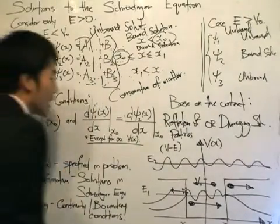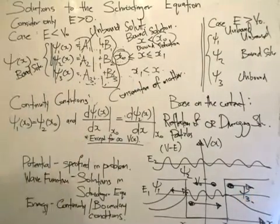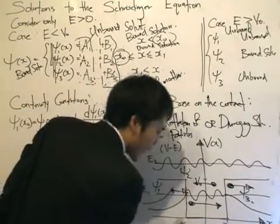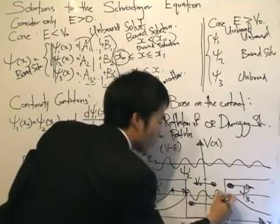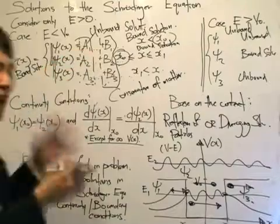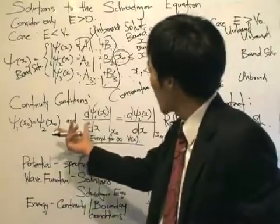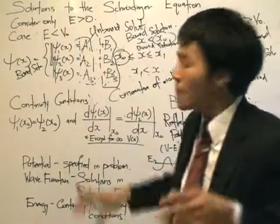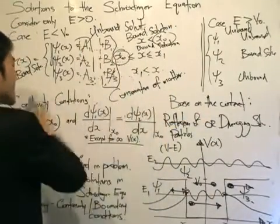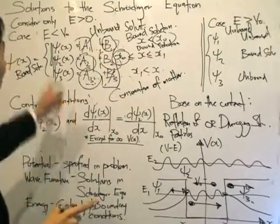Graphically, psi 1 is given by this solution, psi 2 by this solution, and psi 3 by this solution. The solutions meet where the potential changes — at x naught and x₁, at this point and this point. At these points we apply the continuity equations to write the coefficients. We have two continuity equations applied to each set, giving four equations total, which allows us to find a2, b2, b1, and a3.